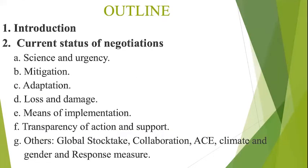Our outline today is based on a brief introduction where we will be just talking about what is going on, and then we'll go to the current status of the negotiation. Under the current status of the negotiation, we'll be covering the science and the agency, mitigation, adaptation, loss and damage, and means of implementations. I have to flag this out: mitigation, adaptation, and loss and damage are now the new focal points within the Paris Agreement, and the means of implementations support all those three elements.